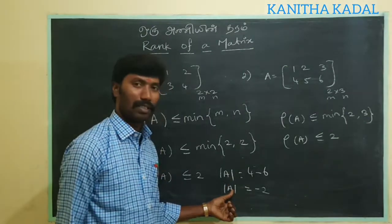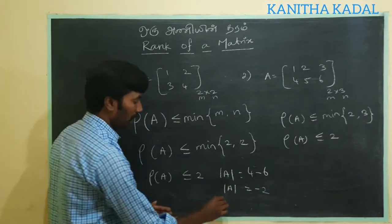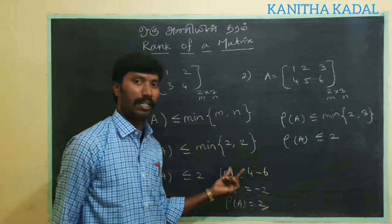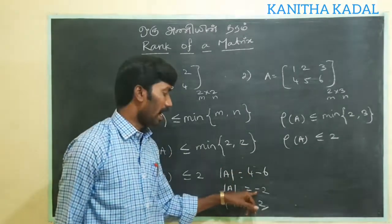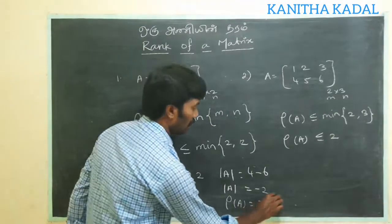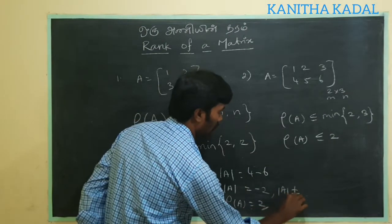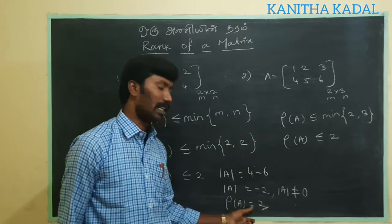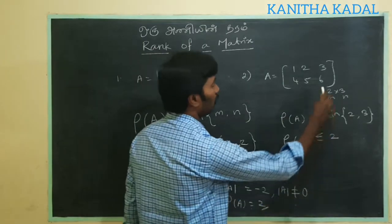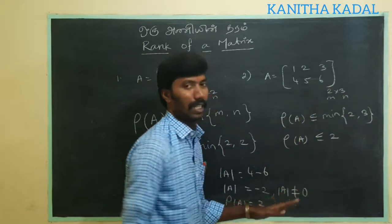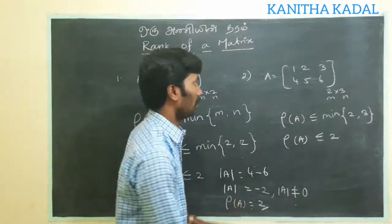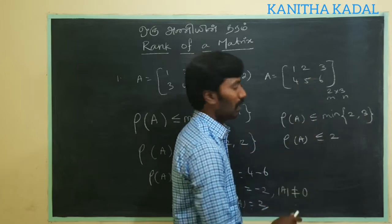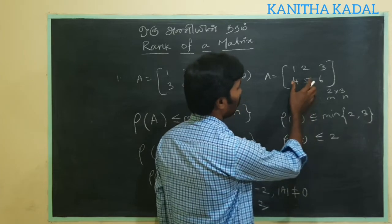If we add 2 by 2, then the value is 0. If we add 0, then the value is 0. If we add 3 by 3, then the value is 0.